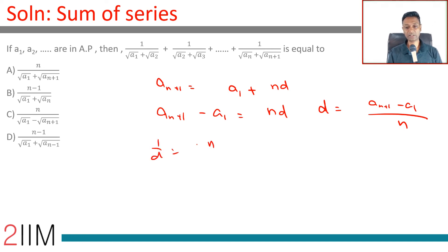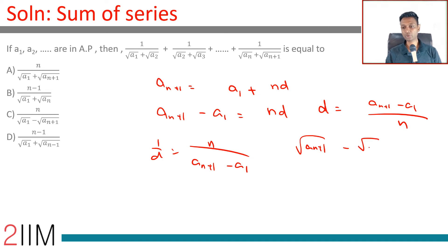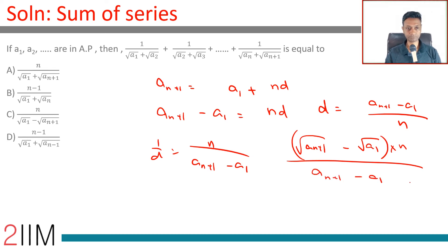Our expression becomes (√a_{n+1} - √a1) times n/(a_{n+1} - a1).